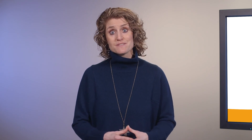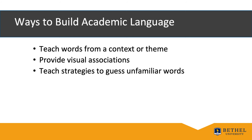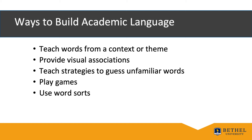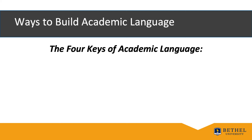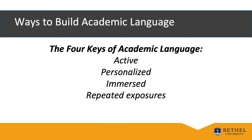Besides teaching morphology and using word walls, other ways to build academic language include: teaching words from a context or theme, providing visual associations, teaching strategies to guess unfamiliar words, playing games, using word sorts — which are not just for spelling words but are a great technique for content words as well — and using a concept definition map, where even the simplest graphic organizer can be helpful. Again, in using any of these techniques, try to keep these four ideas in mind: active, personalized, immersed, and repeated exposures.